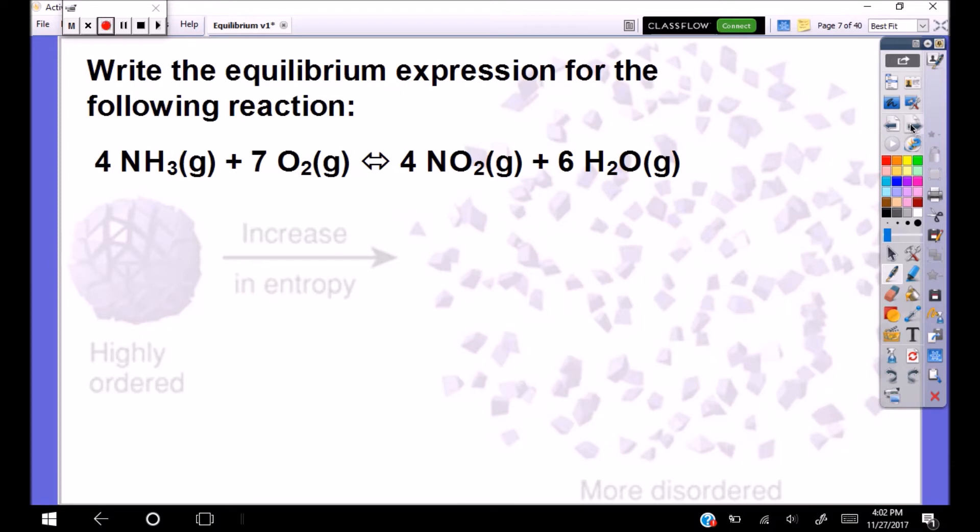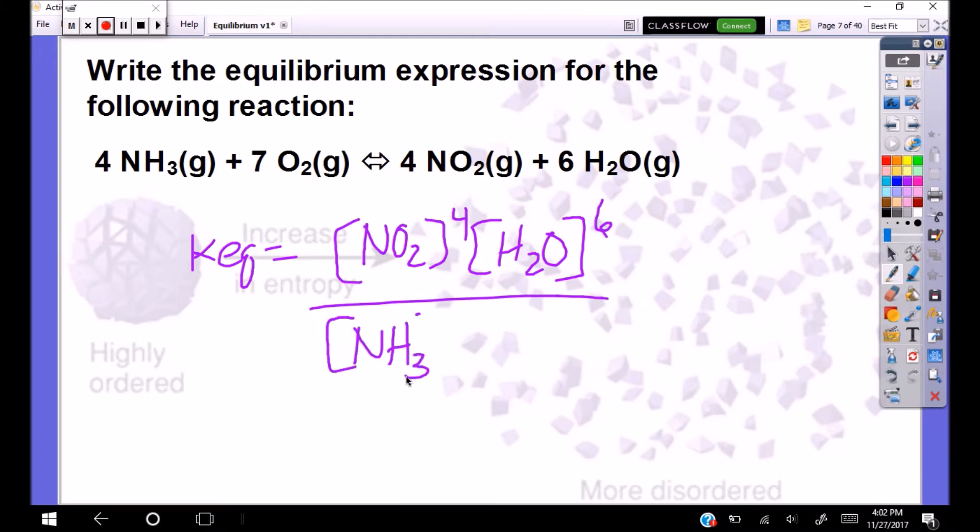Write the equilibrium expression for the following reaction. Go ahead. And this looks complicated, but it's actually pretty straightforward. You just have to keep track of your exponents and that's all. So same thing. KQ products NO2 to the fourth power. Water is a pure substance, but because it's in the gaseous form, we're looking at the vapor. So we can include it here, which is good. H2O to the sixth, NH3 to the fourth and O2 to the seventh. Perfect.